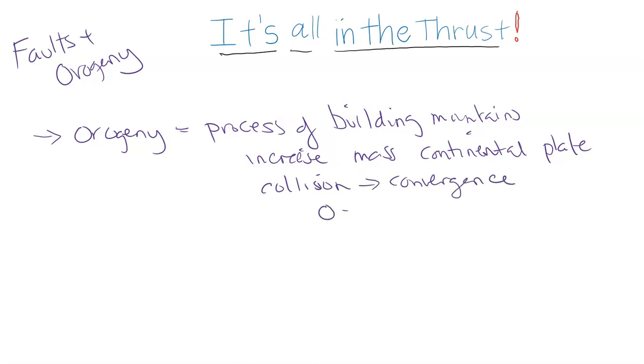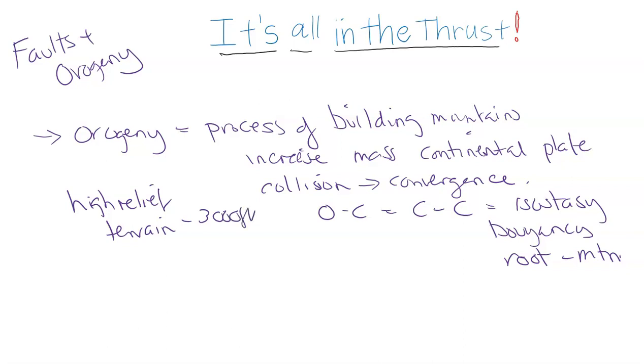It starts out as an ocean-continental convergence, then forms a continental-continental, and based on isostasy and the buoyancy, we get the formation of a large root under the mountain and high-relief terrain, generally over 3,000 feet in elevation.